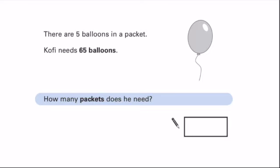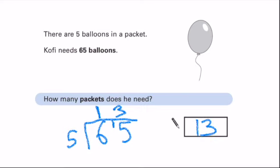Welcome back. We need to find out how many times, how many lots of 5, how many times does 5 fit into 65. So this is actually a division. I'm going to do 65 divided by 5, and that will tell me how many times 5 is in 65. 5 goes into 6 once, with a remainder of 1, and 5 goes into 15, 3 times. So Kofi needs 13 packets, because if you do 13 times 5, you get 65.